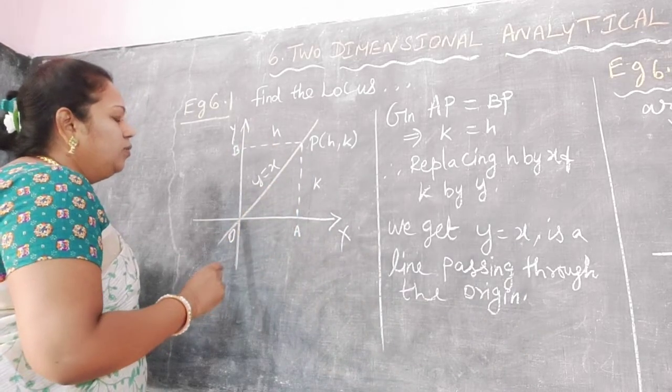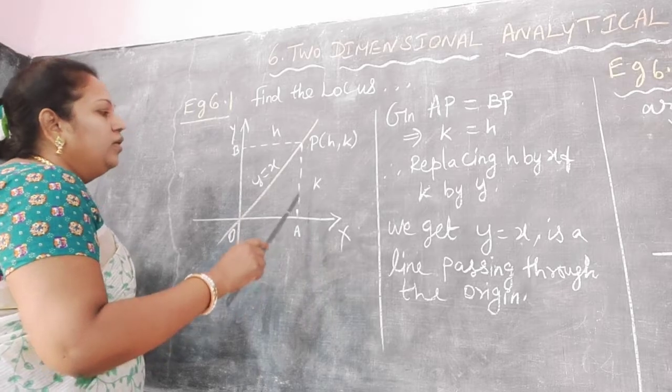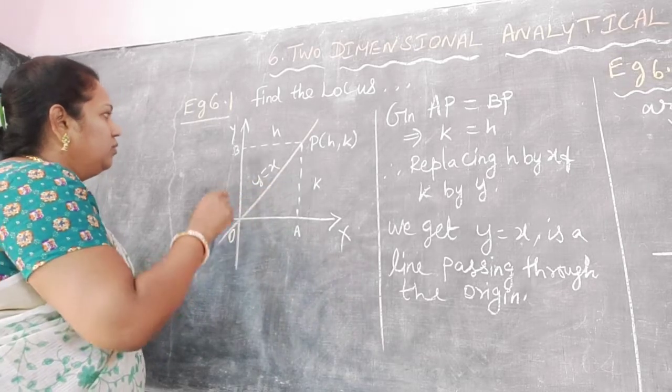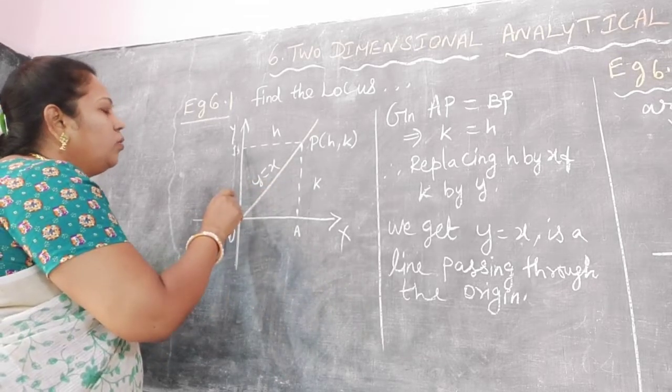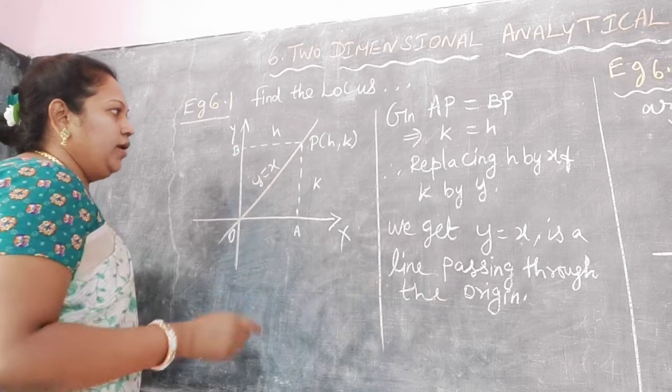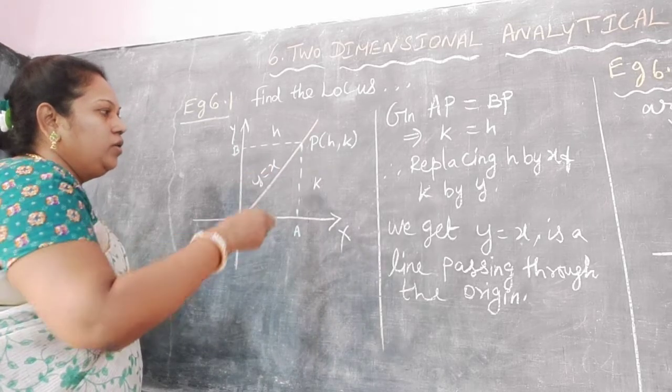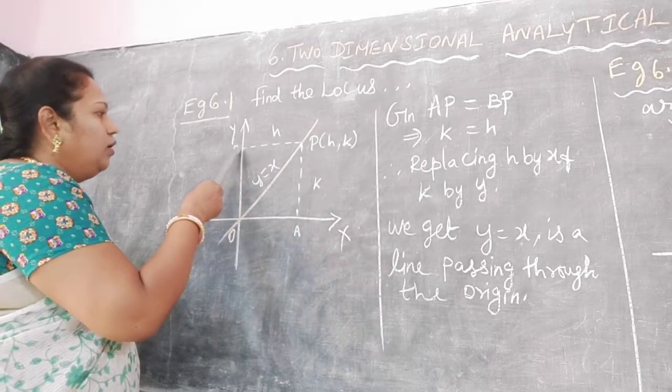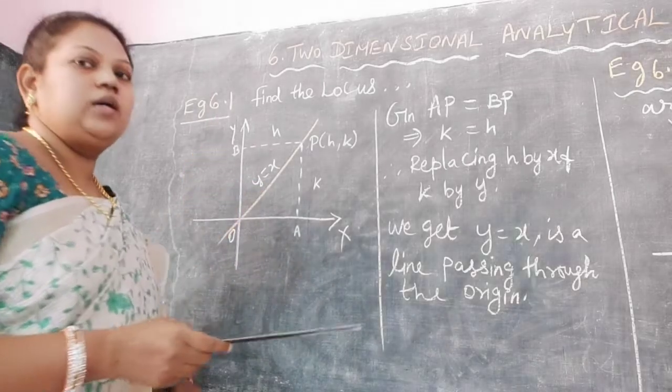Label O, A. Draw line A to P. Then O, B. Draw line B to P. Here AP equals k, and BP equals h.